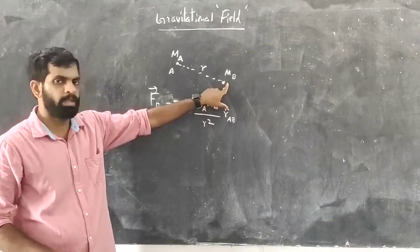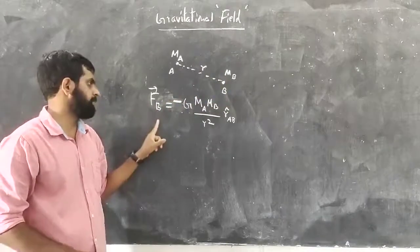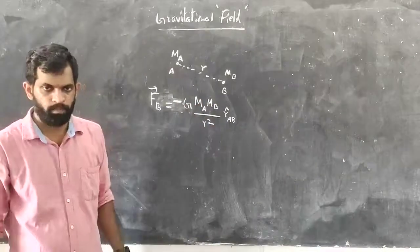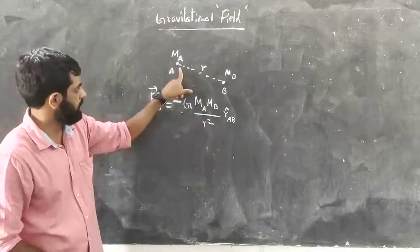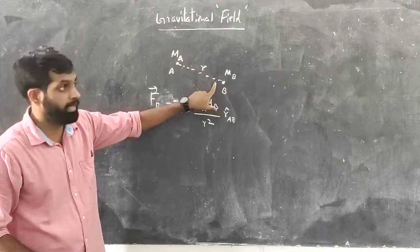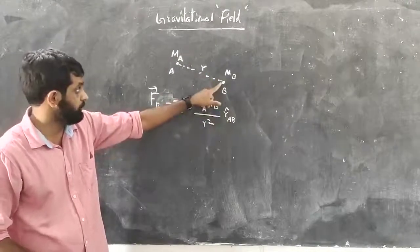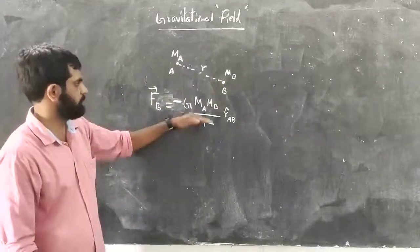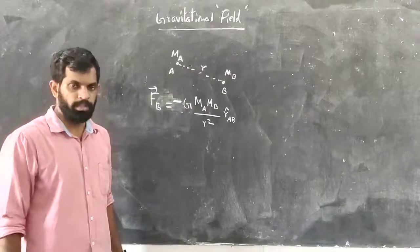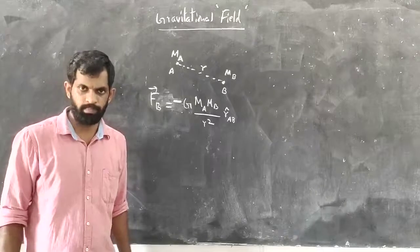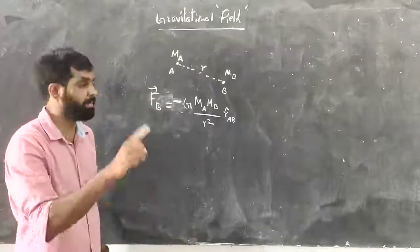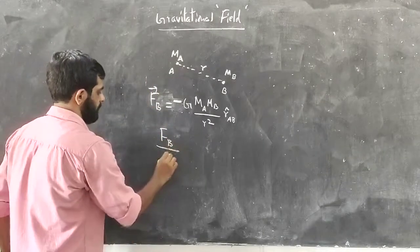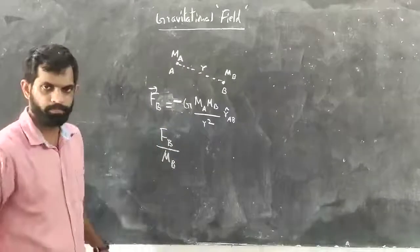So the gravitational force on B is given by FB equal to minus G·MA·MB/R² times the unit vector r̂_AB. Now I am defining the gravitational field of A. It is the ratio of FB divided by MB — that is, gravitational field of A equals FB divided by MB.